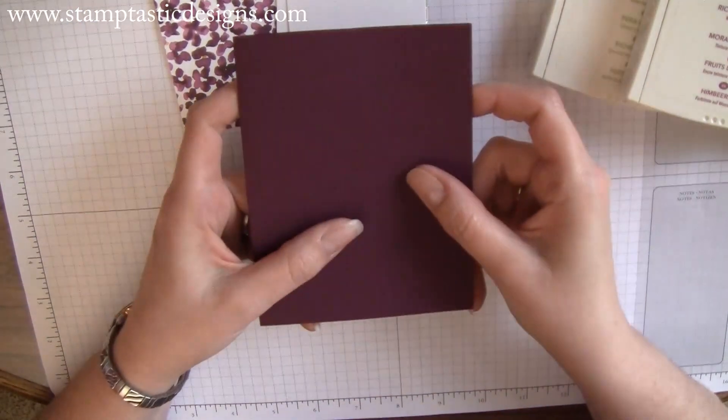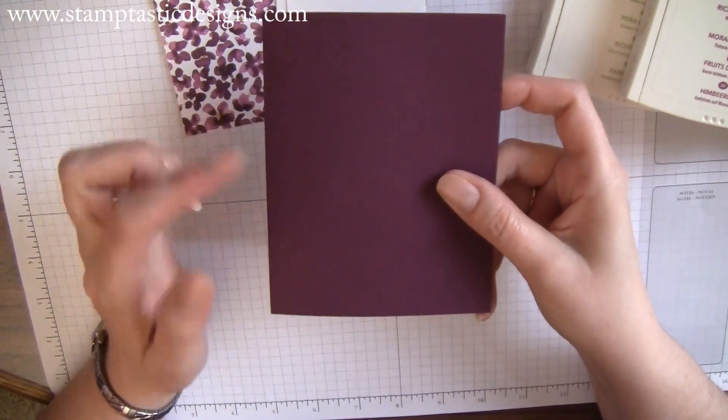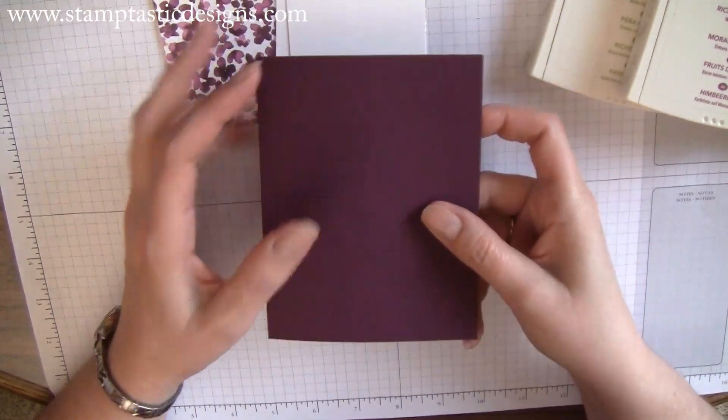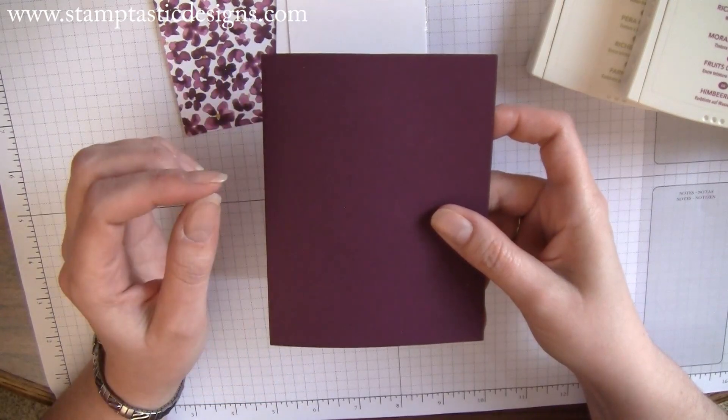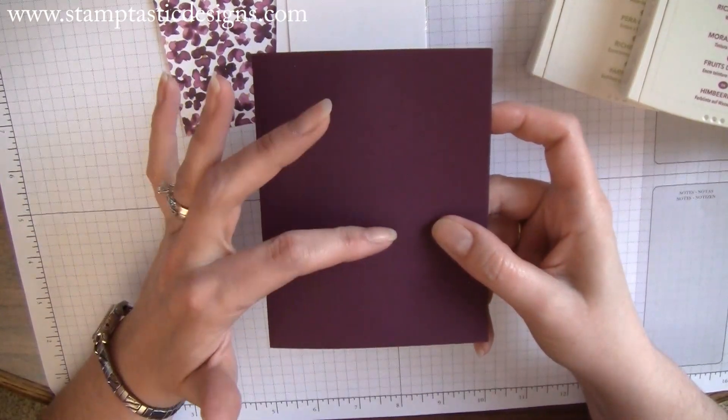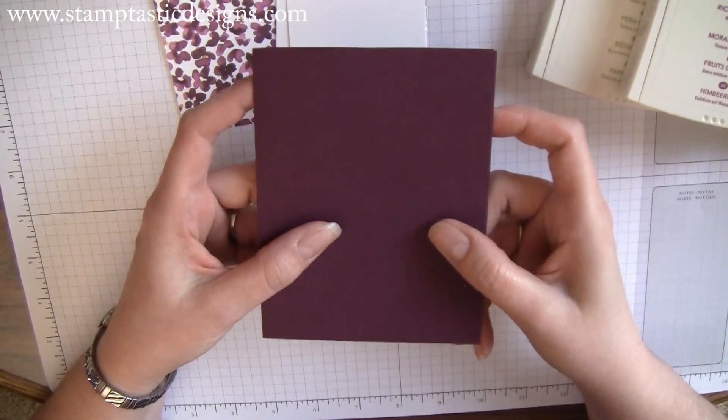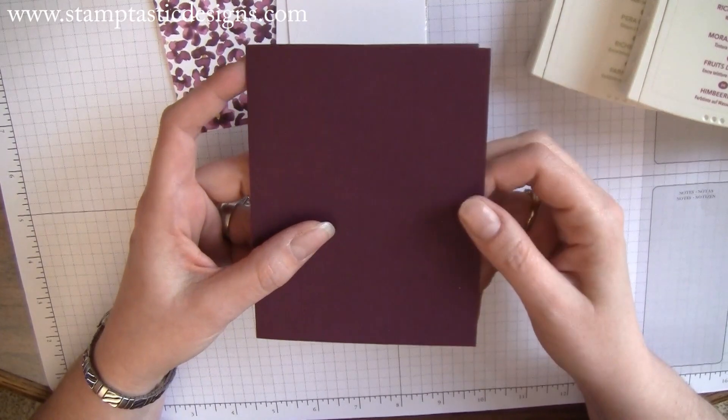You're going to start out with a piece of Blackberry Bliss. If you're going to do the exact same card that I'm doing, I'll tell you what supplies you'll need. This is Blackberry Bliss cardstock.